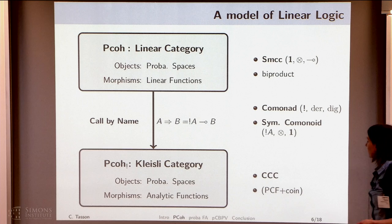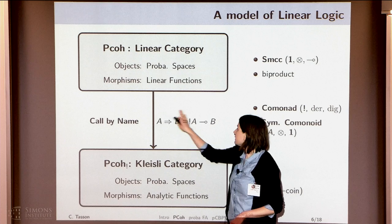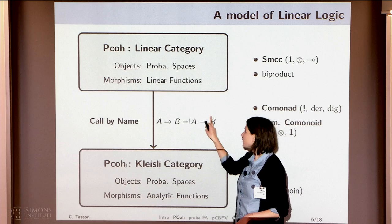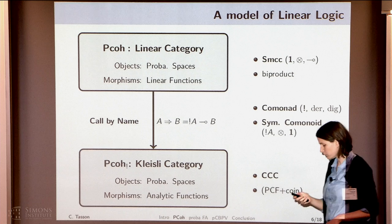Thanks to this comonad, you will be able to compute the non-linear category — the classic category — whose objects are also probabilistic spaces and whose morphisms are analytic functions. We get a Cartesian closed category in which we can interpret probabilistic PCF. This encoding of the exponential already uses the call-by-name setting, because a program of this type will use a bunch of inputs to compute its output.